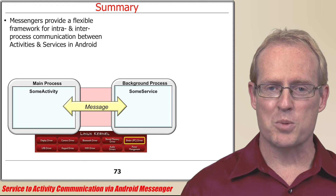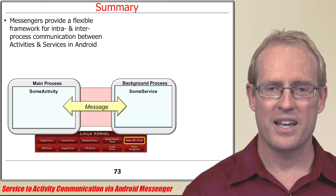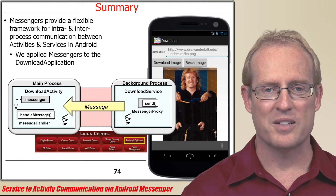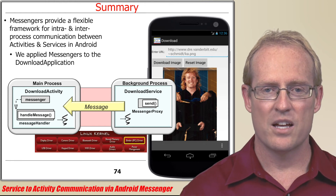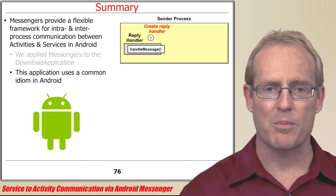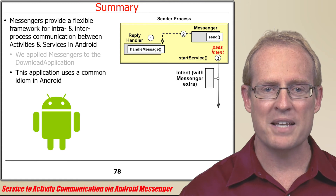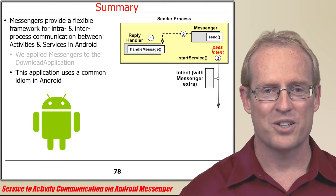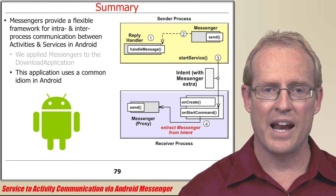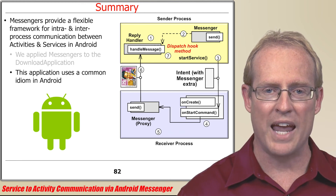In summary, Messengers provide a flexible framework for intra- and inter-process communication between activities and services in Android. We shared how the download application uses the Messenger to communicate a path name from the download service back to the download activity. This design is consistent with a common idiom used throughout Android where an activity first creates a replyHandler, next creates a Messenger that encapsulates a reference to that handler, and then passes the Messenger to a started service as an extra to an intent. When the service receives the intent, it extracts the Messenger and uses it to send a reply message back to the activity, where the message is delivered to the replyHandler's handleMessageHook method.